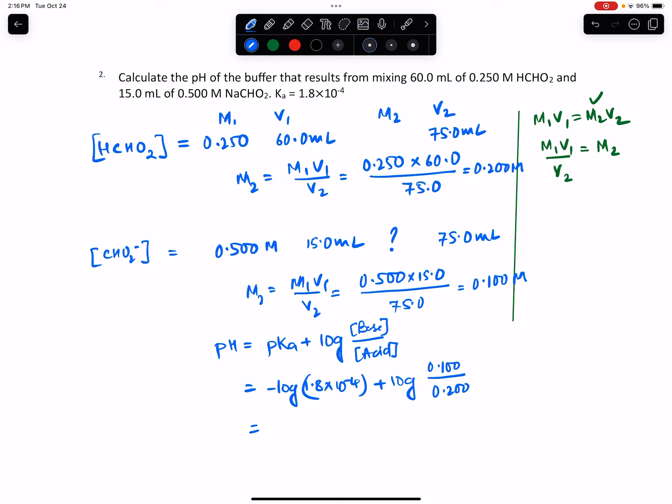Upon simplifying, pKa becomes 3.74 and the log term becomes -0.30, giving pH = 3.44. And there you have it - that's the pH of this buffer solution. Thank you for watching.